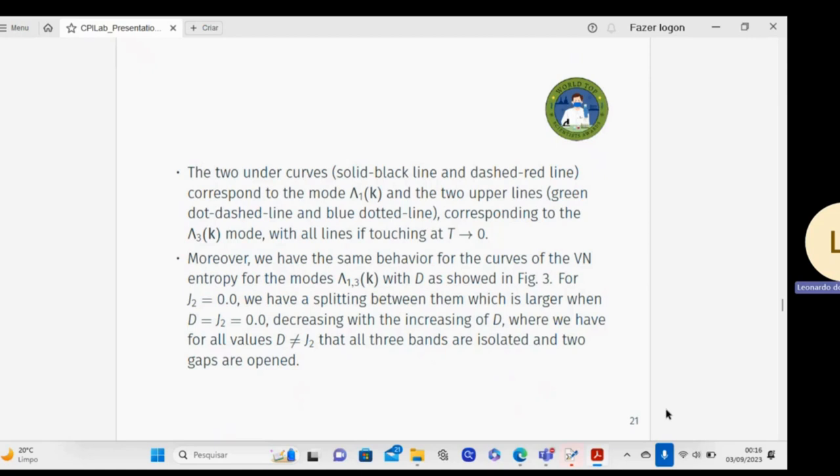Moreover, we have the same behavior for the curves of the von Neumann entropy for the modes lambda one and three, with D as shown in figure three for the J2 values of zero.